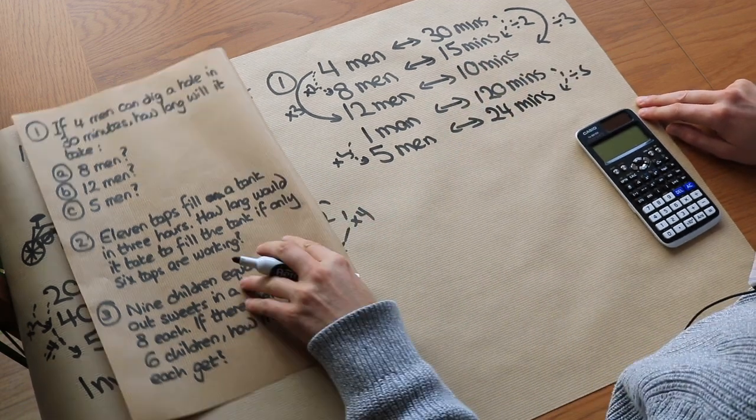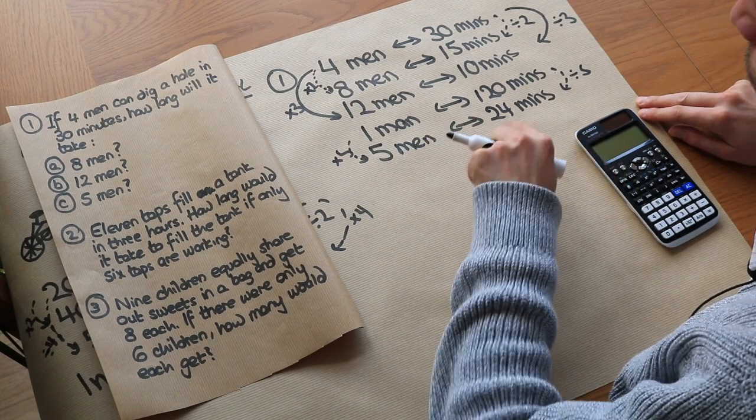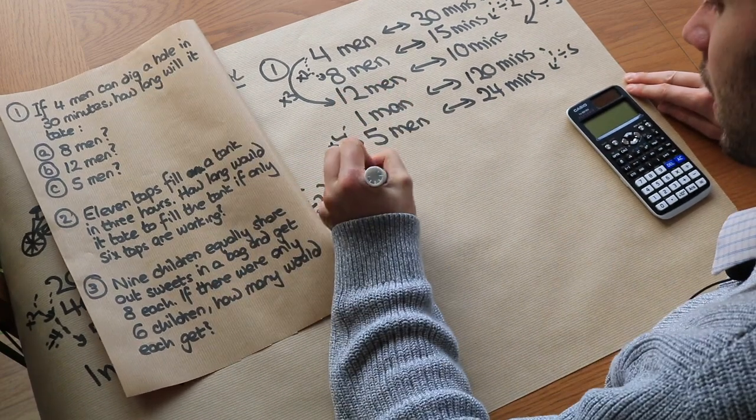Now this method I used this time was called the unitary method. The unitary method is basically finding out what the value is for 1 thing, in this case, 1 man. Let's do question 2.